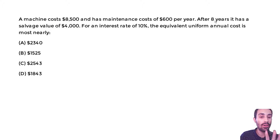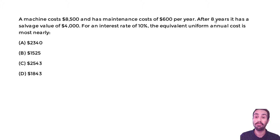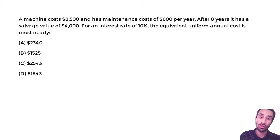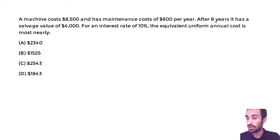A machine costs $8,500 and has maintenance costs of $600 per year. After eight years, it has a salvage value of $4,000. For an interest rate of 10%, the equivalent uniform annual cost is most nearly what?